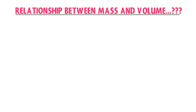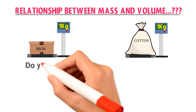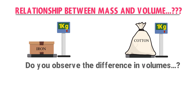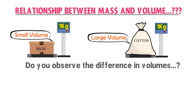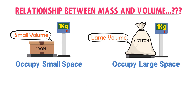Is there any relationship between mass and volume? Consider a box containing iron and a bag containing cotton. Let the mass of iron in the box be 1 kg and the mass of cotton in the bag also be 1 kg. Do you see the difference in volumes? Even in our daily life, we can see the difference in volumes. Although the mass of iron and cotton is both 1 kg, the volume of 1 kg cotton is greater than the volume of 1 kg iron. One can say that 1 kg iron occupies less space than 1 kg cotton.